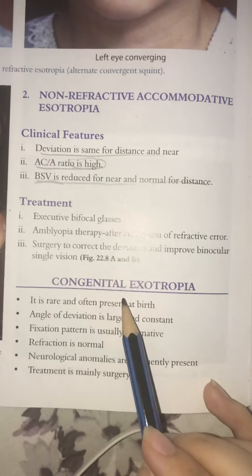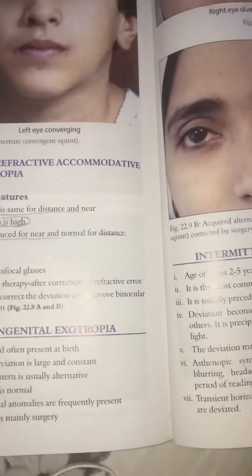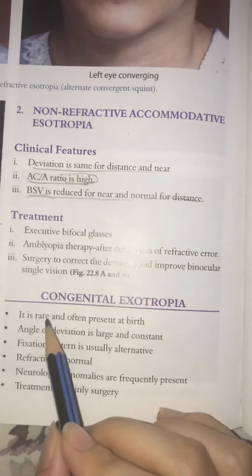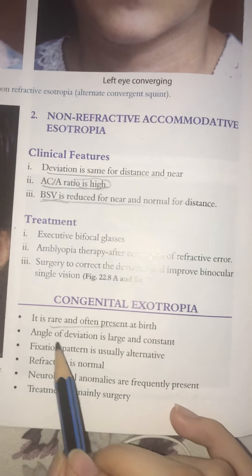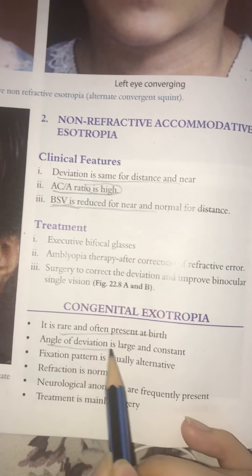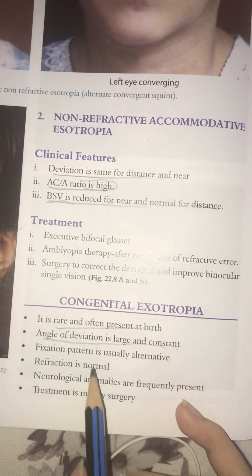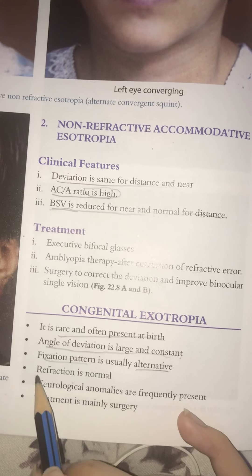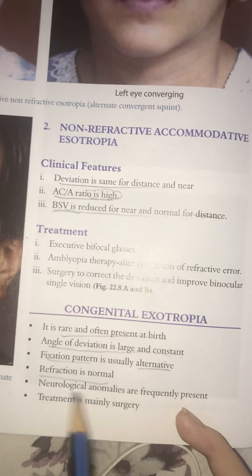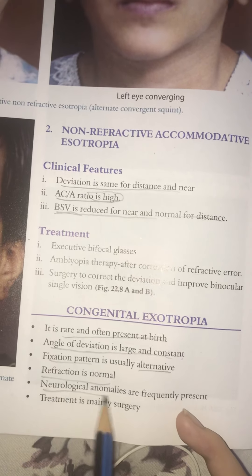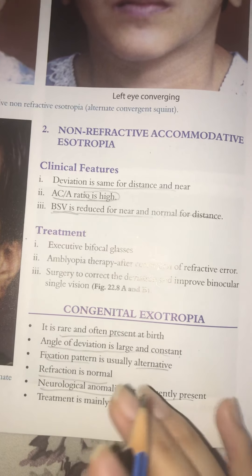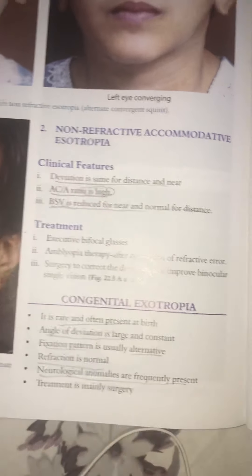Exotropia can be congenital, intermittent, or constant. Congenital exotropia is rare, present at birth. The angle of deviation is large and constant, the fixation pattern is alternating, and refraction is normal. There may be associated neurological anomalies. Treatment is primarily surgical.